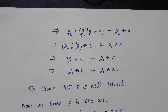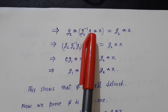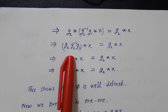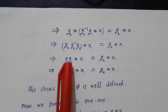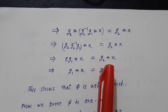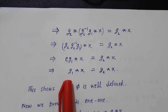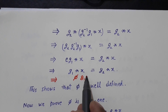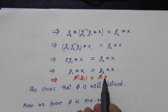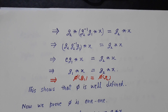Now applying g₂ on both sides: g₂ star (g₂⁻¹g₁ star x) equals g₂ star x. By the property of group action, we can combine g₂ with g₂⁻¹g₁, giving (g₂·g₂⁻¹·g₁) star x equals g₂ star x. Since g₂·g₂⁻¹ is the identity, we get g₁ star x equals g₂ star x, meaning φ(g₁) equals φ(g₂). So the map φ is well-defined.